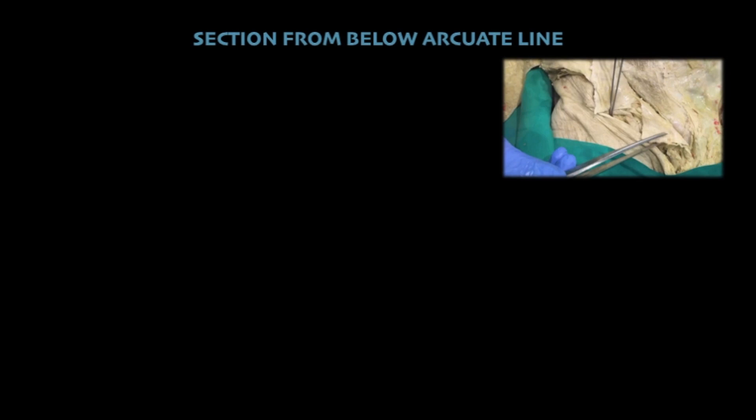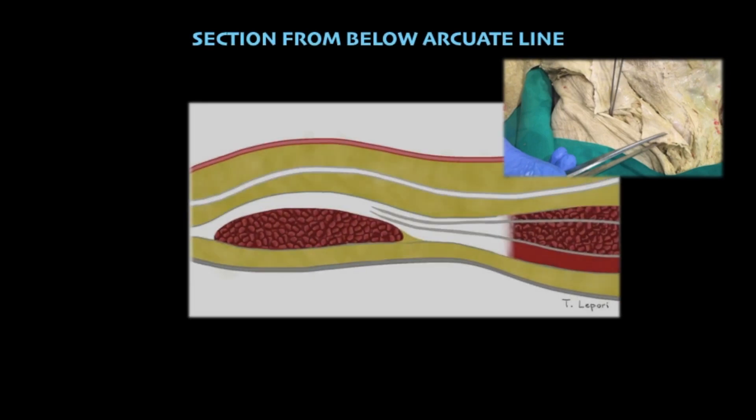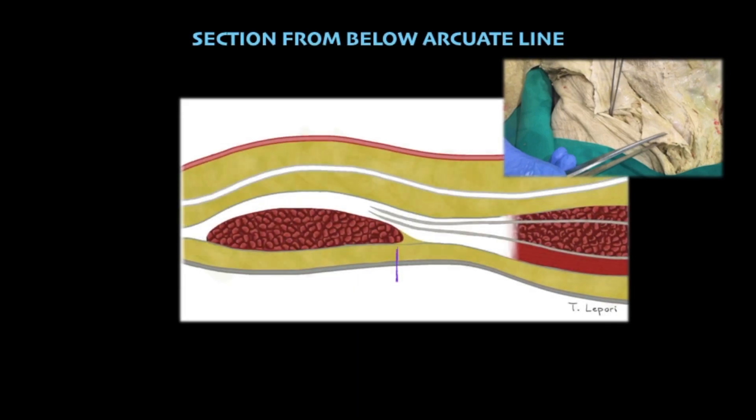Below the arcuate line, the aponeurosis of the transversus abdominis merges with the internal oblique as it passes anterior to the rectus complex.